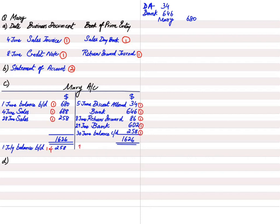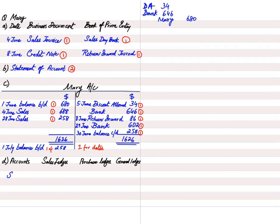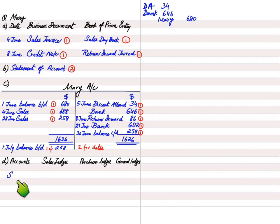The next requirement relates to ledgers. A ledger is a book which contains T accounts. There are three ledgers in accounting: the sales ledger, the purchase ledger, and the general ledger. The sales ledger contains T accounts of customers (debtors) only. The purchase ledger contains T accounts of creditors (suppliers). The general ledger contains T accounts of everything else, and is also known as the nominal ledger.